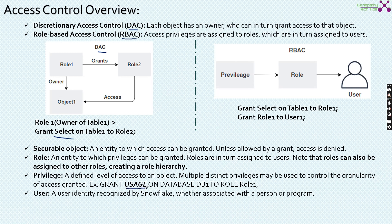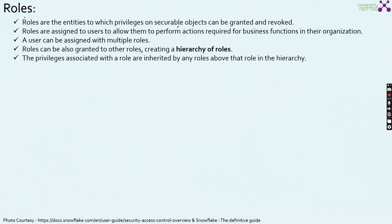Another example is: grant usage on database DB1 to role 1 — here 'usage' is the privilege. Similarly, select, modify, and monitor are all privileges which we can grant. A user is an entity recognized by Snowflake, whether associated with a person or with a program. Roles are the entities to which privileges on securable objects can be granted or revoked. Roles are assigned to users to allow them to perform actions required for the business functions in their organization.